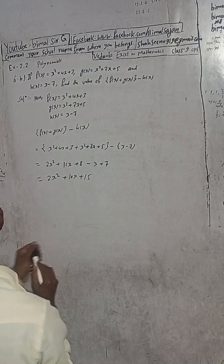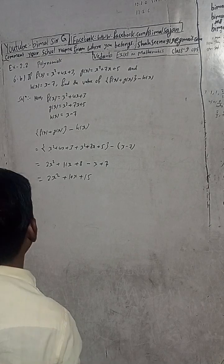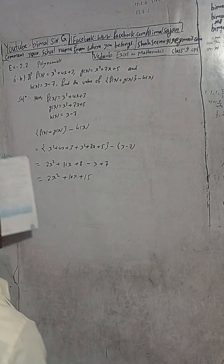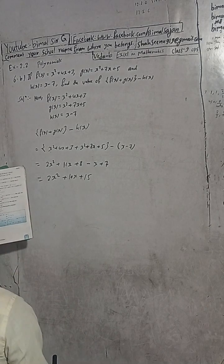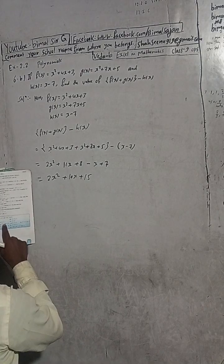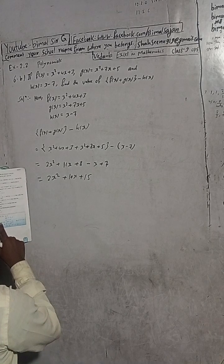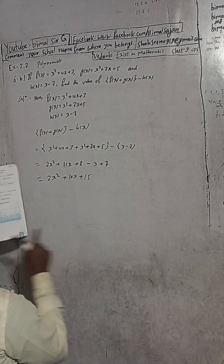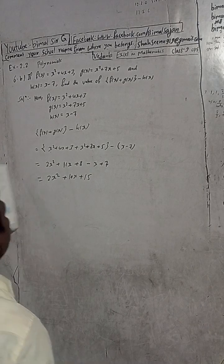Let me check — the answer is 2x squared plus 10x plus 15. This is the solution.